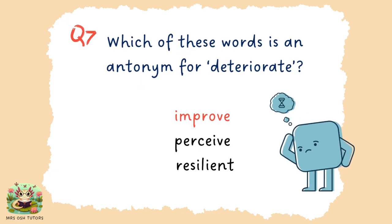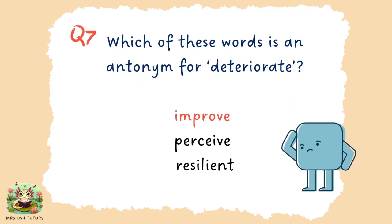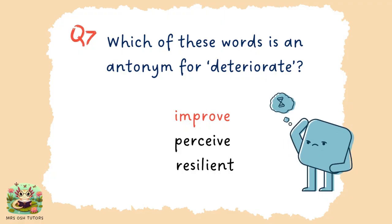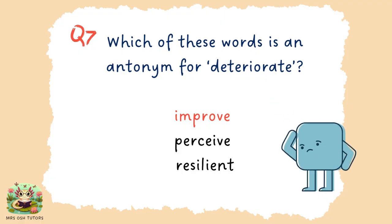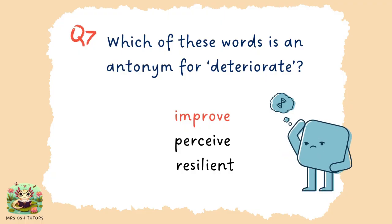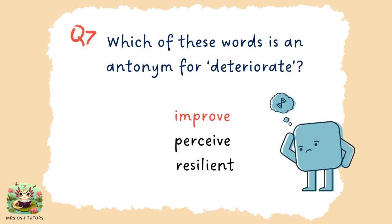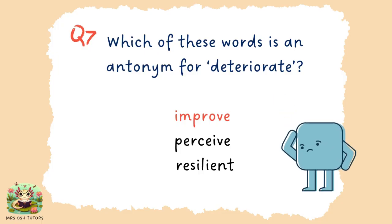Question seven. Deteriorate means to worsen, so the opposite of that would be to improve. Perceive means to sense something. And if you're resilient, you're strong in handling difficult situations.